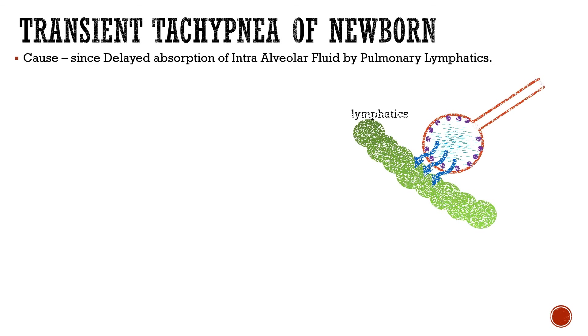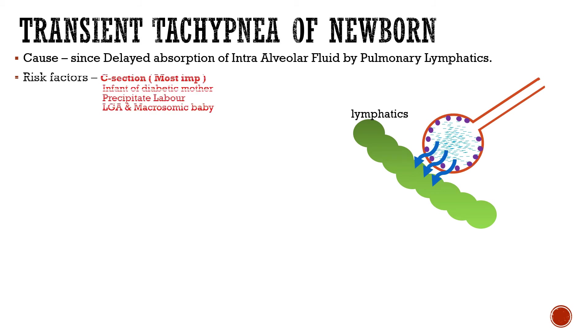Now let's look at transient tachypnea of newborn, or TTN. Transient tachypnea of newborn is caused due to delayed absorption of intra-alveolar fluid by the pulmonary lymphatics. The risk factors include caesarean section, infant of diabetic mother, precipitate labor, and large for gestational age or macrosomic baby.